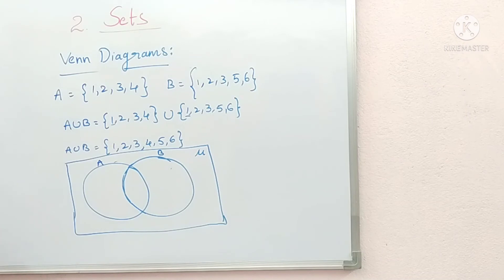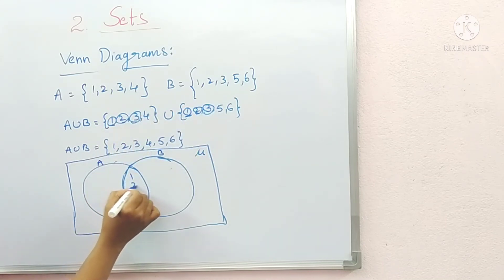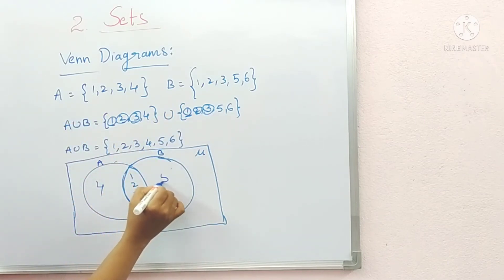Just circle what elements are contained in both A and B. Here: 1, 2, 3. So write 1, 2, 3. What are the remaining elements in A? 4. And remaining elements in B? 5, 6.